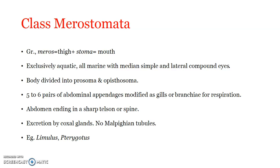There are five to six pairs of abdominal appendages which are modified as gills for respiration. The abdomen ends in a sharp telson or spine. Excretion is brought about by coxal glands, not Malpighian tubules as in insects — so here it is coxal glands responsible for excretion.